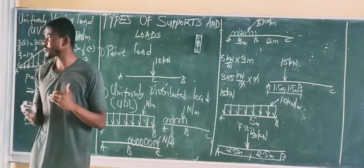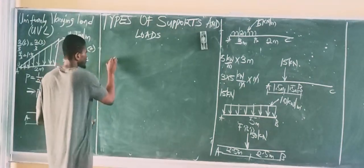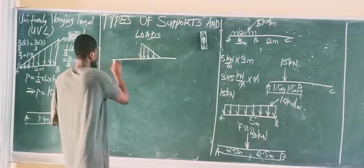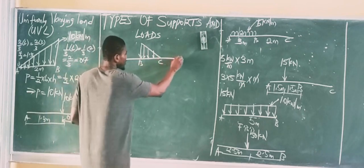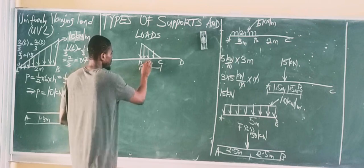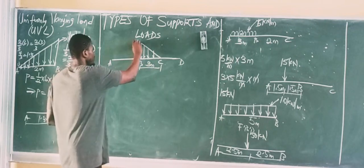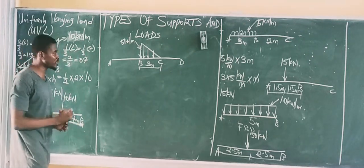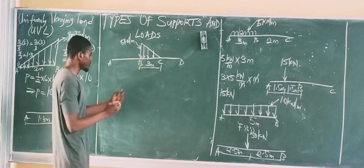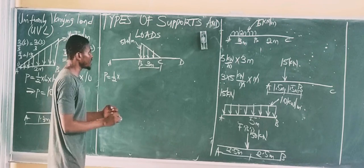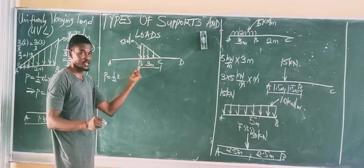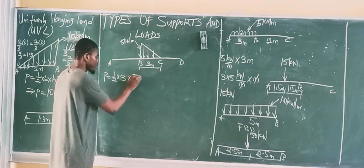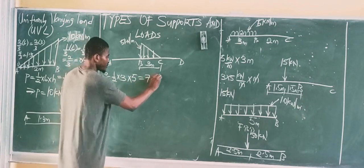Let's try another example. Say we have a UVL on a beam with points A, B, C, and D, with the UVL between B and C, and the length of the UVL is 3 meters with a maximum intensity of 5 kN per meter. To convert to a point load: ½ × 3 × 5 = 7.5 kN.